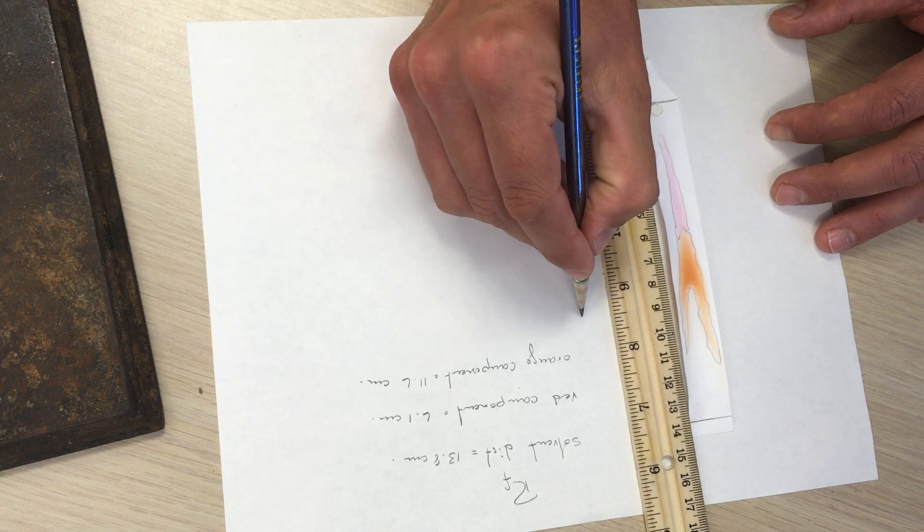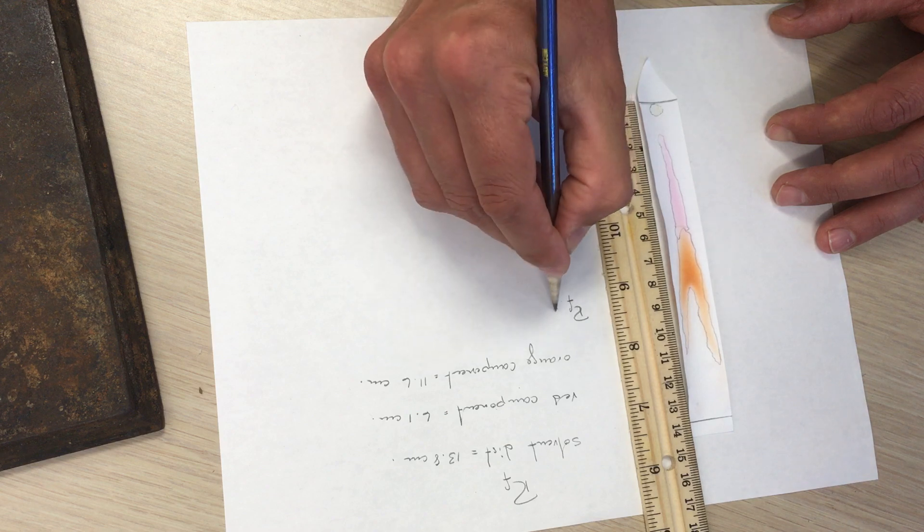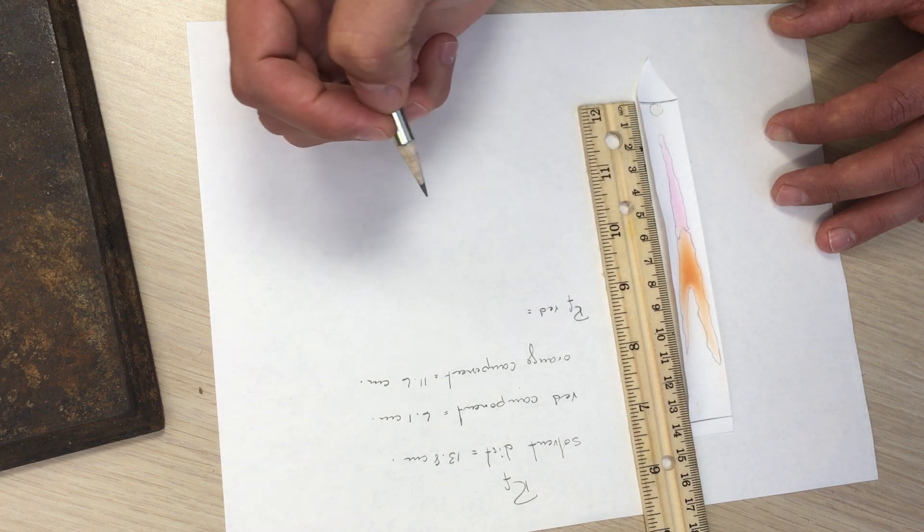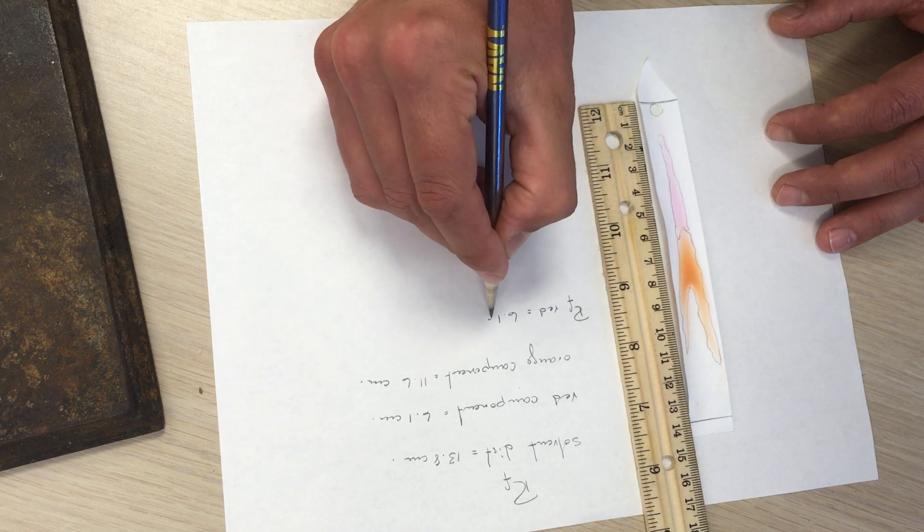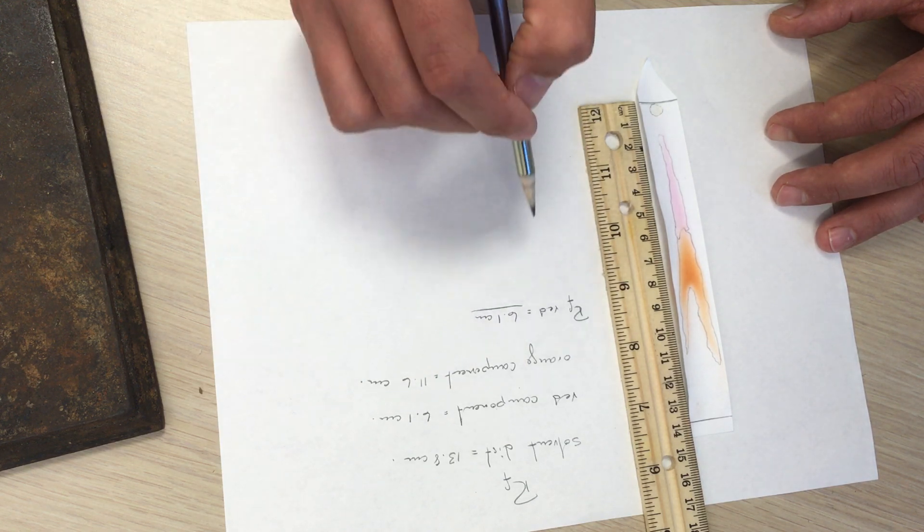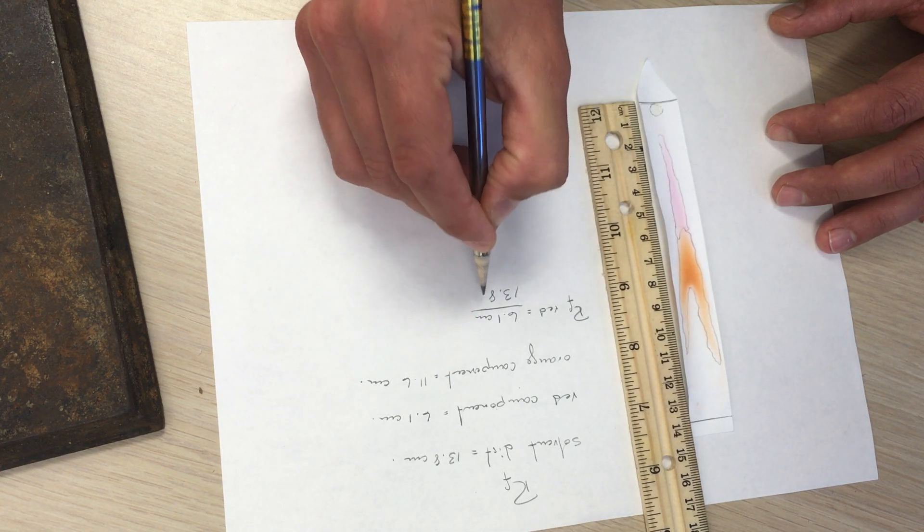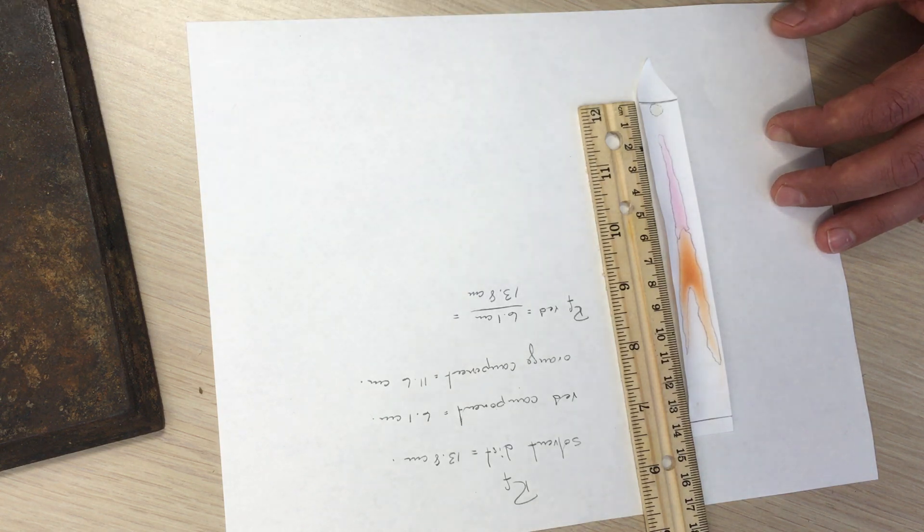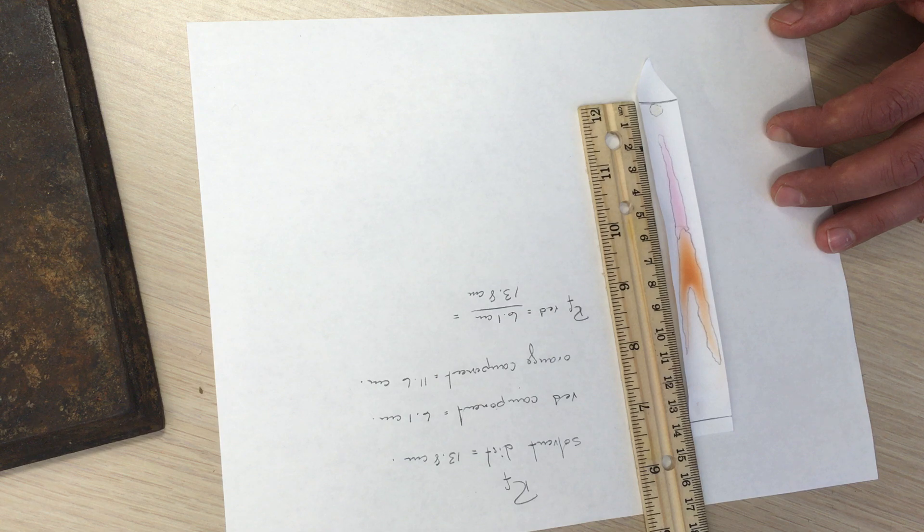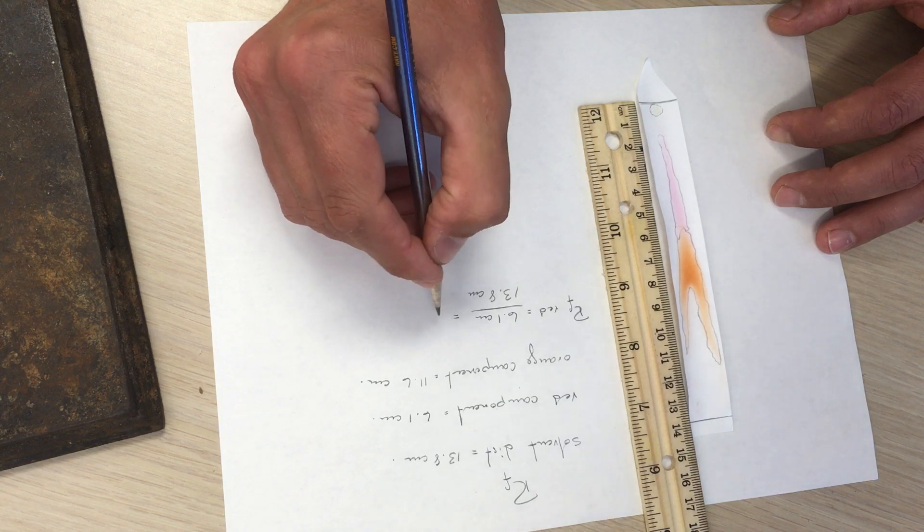So then we can calculate the ratio of front for the red color, which is the distance that the red component traveled, 6.1 centimeters, divided by the distance that the solvent traveled, which is 13.8 centimeters. And so when we do this we get an RF of 0.44.